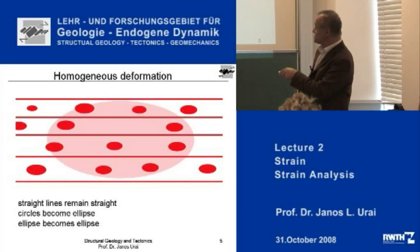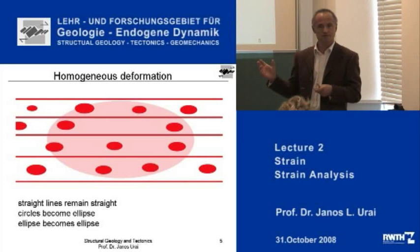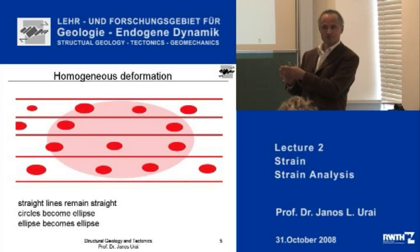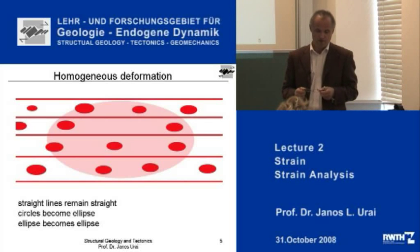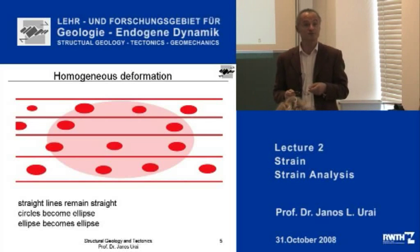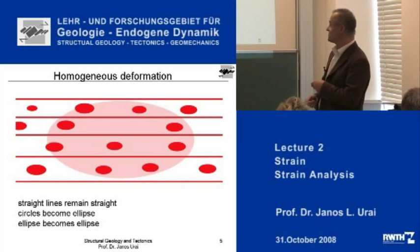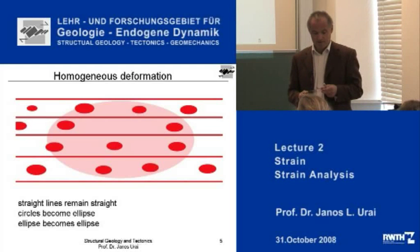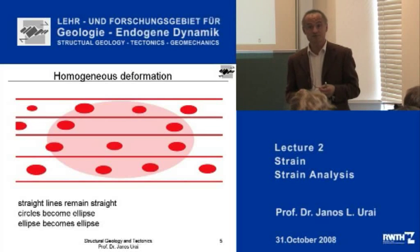If these two ellipses would now look differently, then you would have to say the deformation is only homogeneous on the right side of the picture. So homogeneous deformation at a very basic level means that straight lines remain straight, circles become ellipses, and as we will see later, ellipses become ellipses.